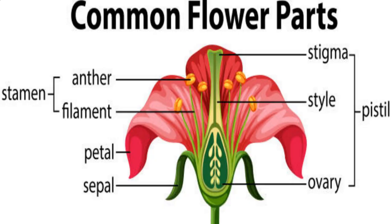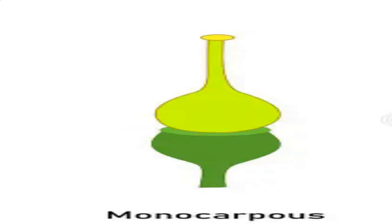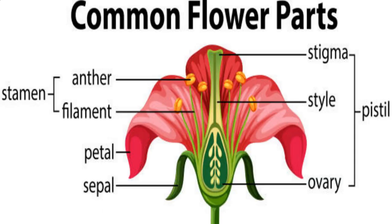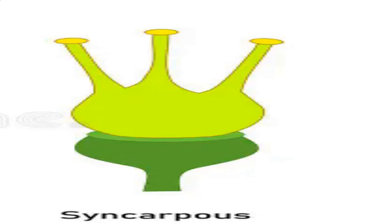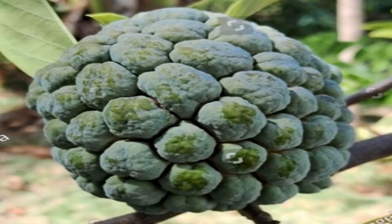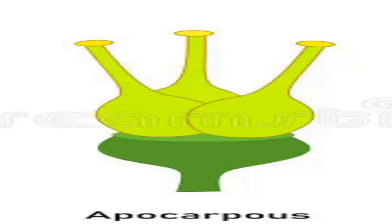The gynoecium is made up of one or more pistils. It may be monocarpellary with a single pistil, or multicarpellary with multiple pistils. When there are multiple pistils, they can be syncarpous, meaning fused together — for example in tomato — or apocarpous, where pistils are free from each other, for example in lotus.